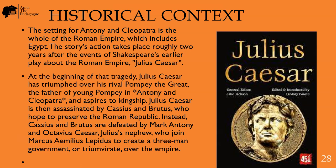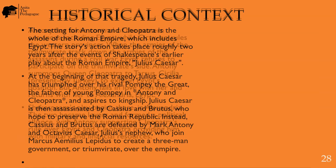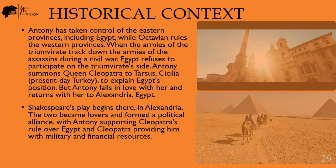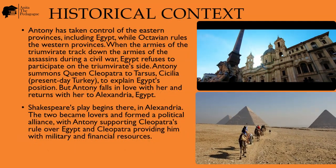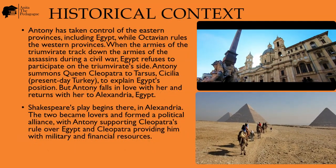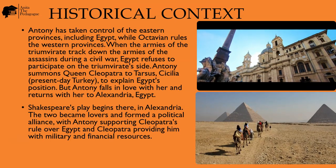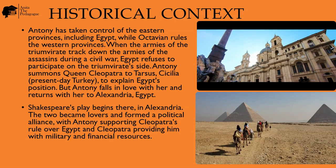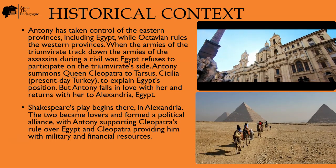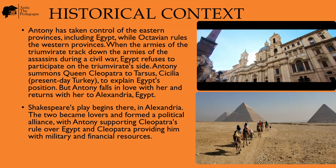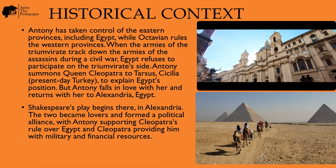Instead, Cassius and Brutus are defeated by Mark Antony and Octavius Caesar, Julius's nephew, who joined Marcus Aemilius Lepidus to create a three-man government, or Triumvirate, over the empire. Antony has taken control of the eastern provinces, including Egypt, while Octavian rules the western provinces.